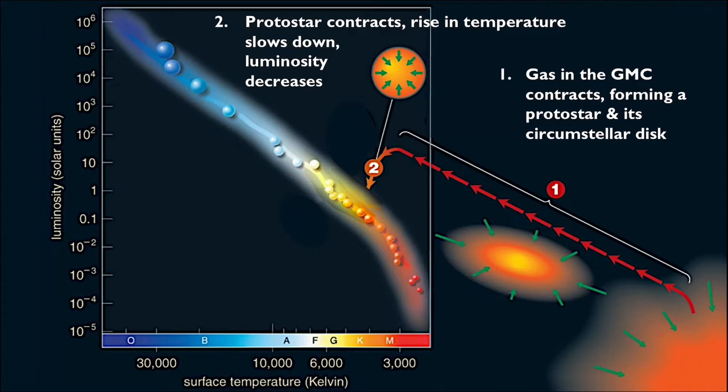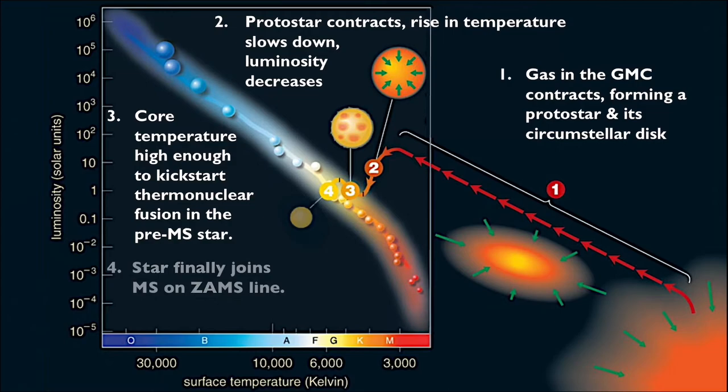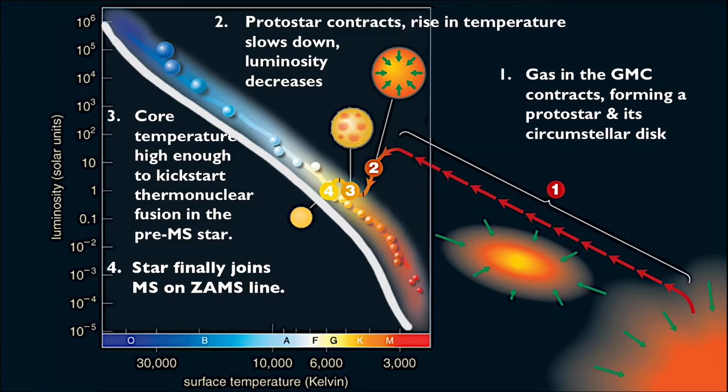Eventually, the core temperature is hot enough to kickstart thermonuclear fusion of hydrogen into helium. At this point, the pre-main sequence star is finally considered a star, and it lands on the zero-age main sequence line, or ZAMS line. This line represents the point where the dominant energy production becomes thermonuclear fusion rather than gravitational contraction.